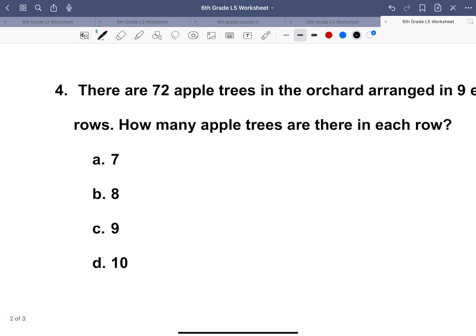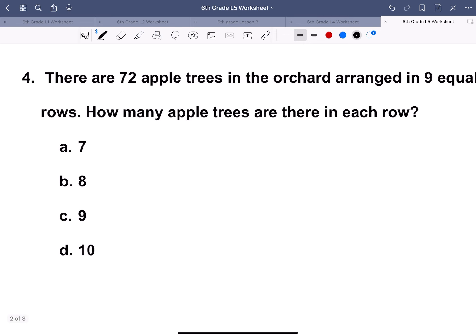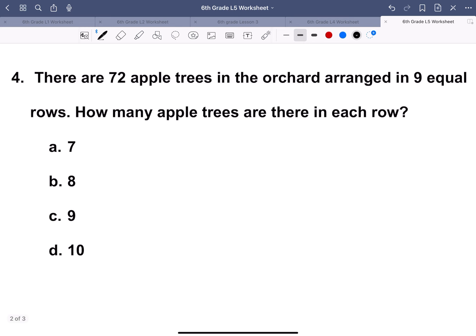There are 72 apple trees in an orchard arranged in 9 equal rows. How many apple trees are there in each row? So we get 72 apple trees arranged in 9 equal rows, so we divide that by 9 again. If we divide 72 by 9, we get 8. So 8 is our answer, which happens to be B.